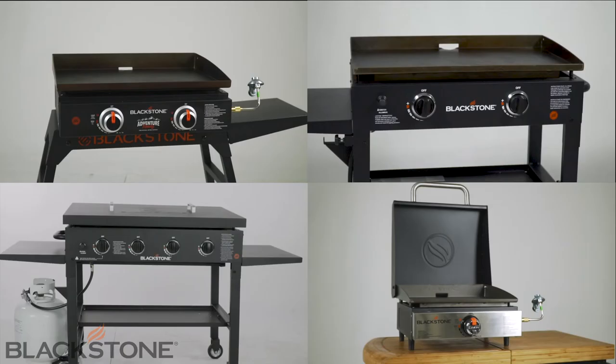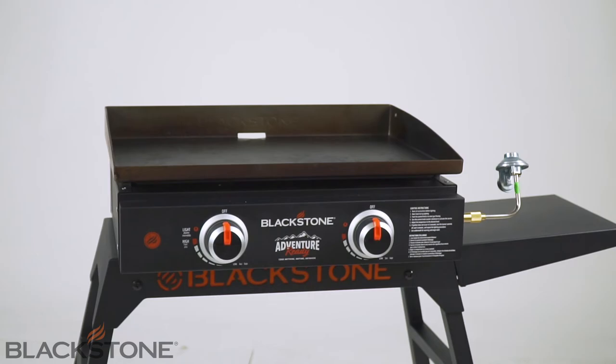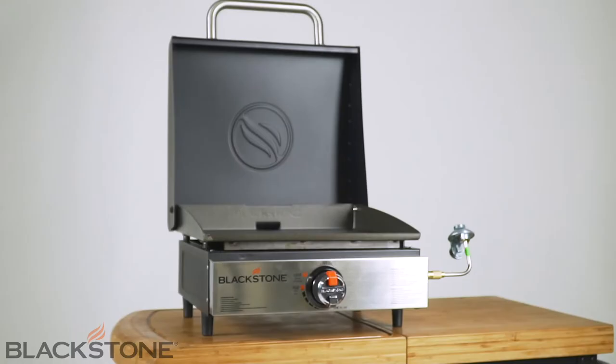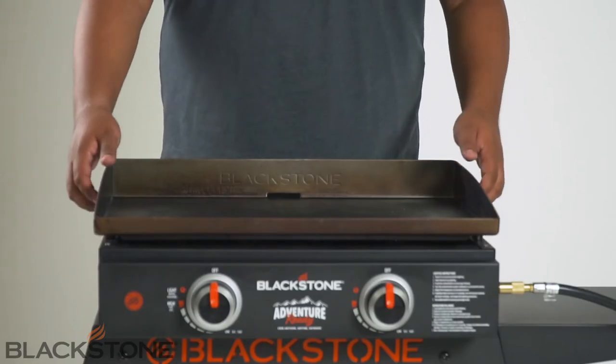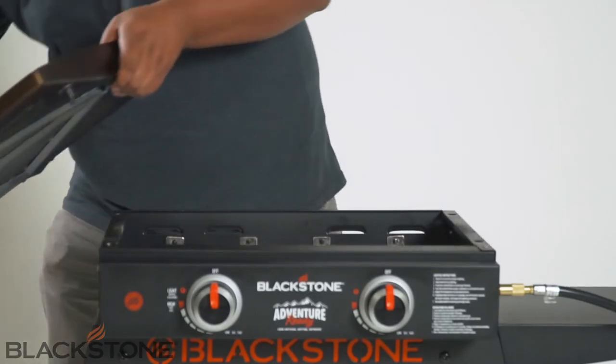Depending on the size of the griddle you own, the steps to remove your burner tubes may vary slightly. For this example, we are using a 22-inch griddle which can apply to a 17-inch and a 28-inch griddle easily. First, remove the griddle top so you can access the burner tubes underneath it.